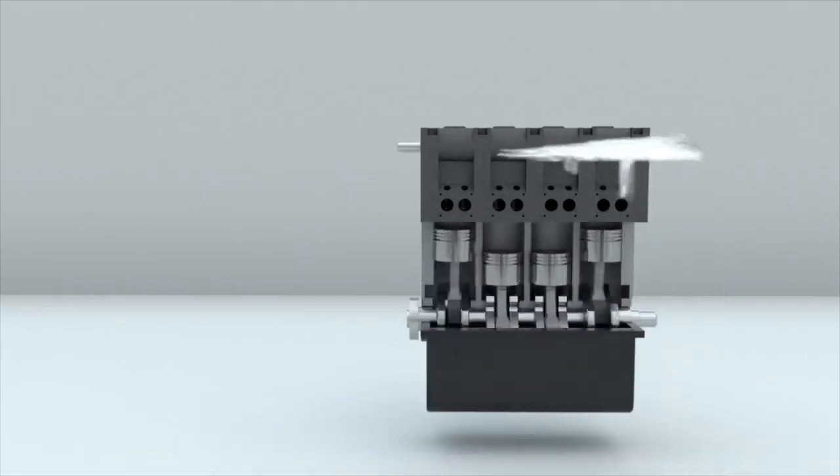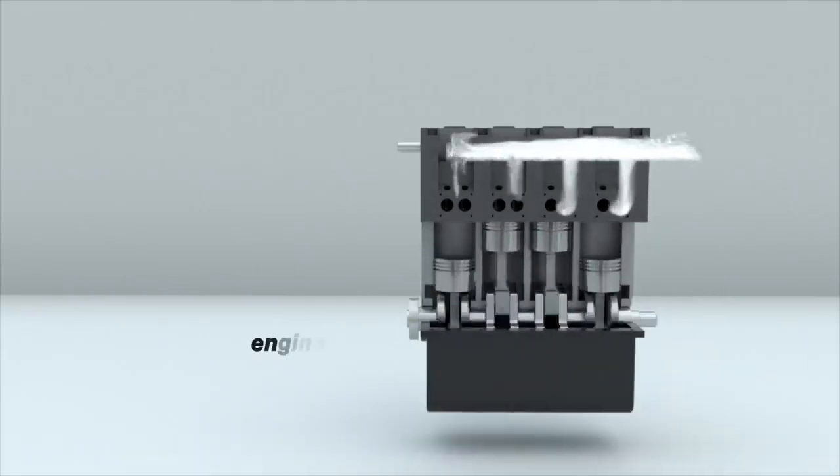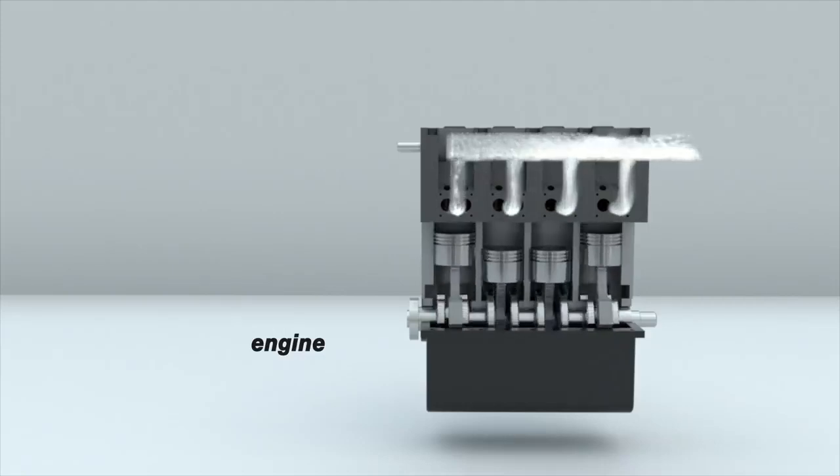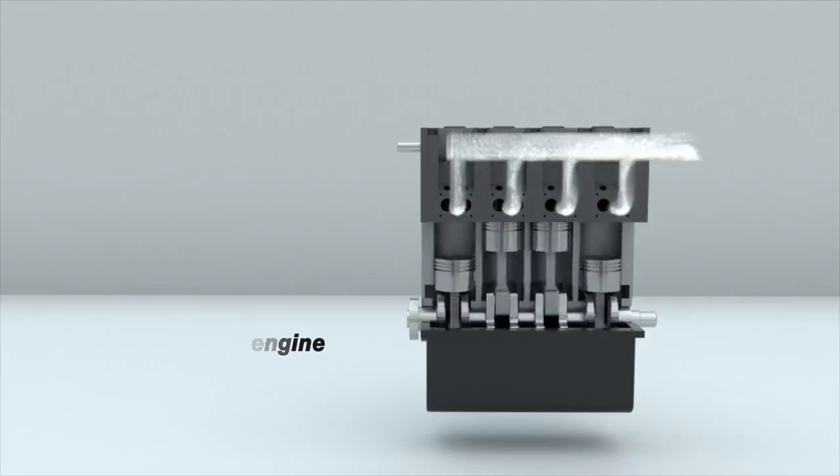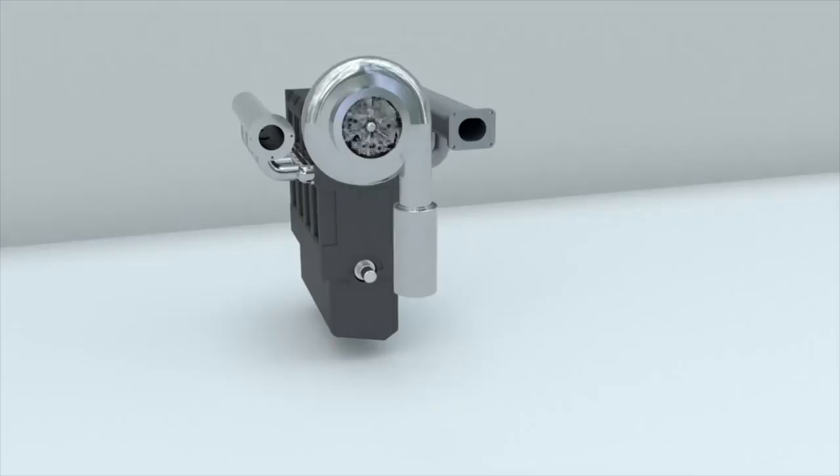How does a turbocharged car engine work? Air can either enter the engine under the influence of atmospheric pressure at the moment when the piston moves and increases the volume of the chamber, or be supplied with the help of a special compressor.